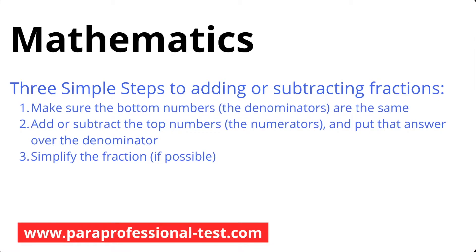There are 3 steps. Step 1 is to make sure the bottom numbers — called the denominators — are the same. Step 2 is to add or subtract the top numbers — called the numerators — and put that answer over the denominator. Step 3 is to simplify the fraction if possible.